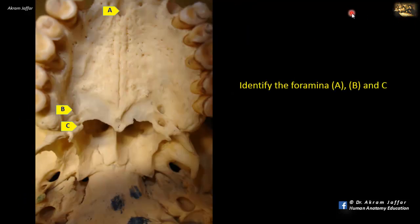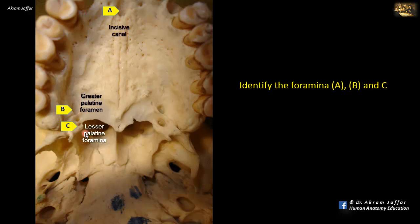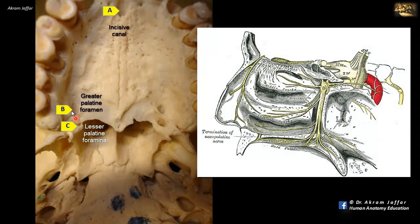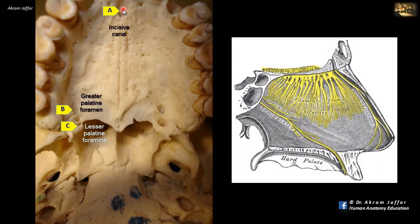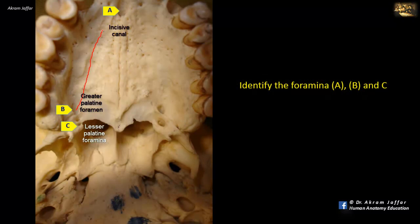Identify foramina A, B, and C. This is a view of the hard palate showing in the midline the incisive canal (A). Posteriorly, B is the greater palatine foramen, and C is a group of small foramina called the lesser palatine foramina. These foramina — both greater and lesser palatine — transmit nerves and vessels that carry their names. They originate in the pterygopalatine fossa and communicate between the pterygopalatine fossa and the mouth, arising from the pterygopalatine ganglion and the maxillary artery. The incisive canal transmits the nasopalatine nerve and the continuation of the greater palatine artery, which ascends into the nose.